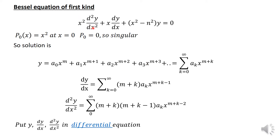Since the differential equation has both d²y/dx² and dy/dx terms, we need to find both derivatives. Given y = Σaₖx^(m+k), dy/dx = Σ(m+k)aₖx^(m+k-1), and d²y/dx² = Σ(m+k)(m+k-1)aₖx^(m+k-2), for k equal to zero to infinity.